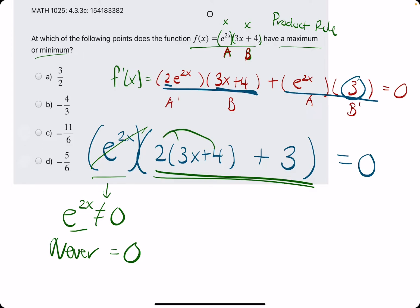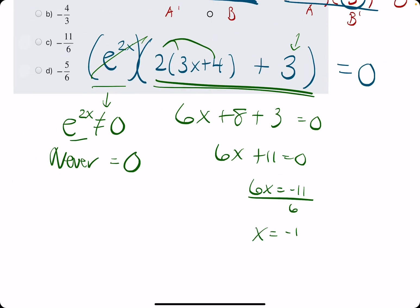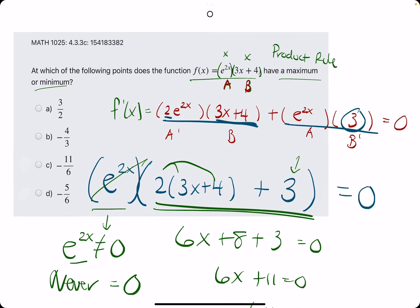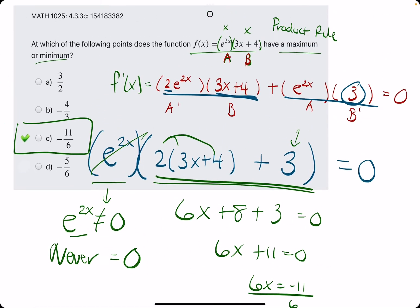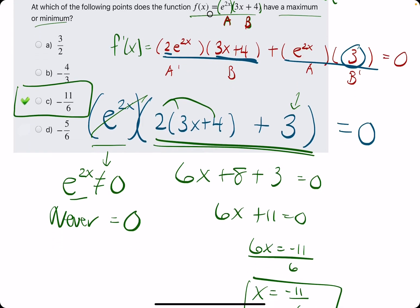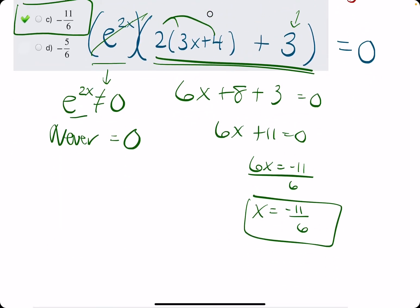I'll distribute the 2 to get 6x plus 8, then tack on the plus 3, giving 6x plus 11 equals 0. Solving for x: subtract 11, divide by 6, and we have x equals negative 11 over 6, which is option C. This is the x value that makes f prime equal to zero, so it's a possible location of a max or a min — it's a critical point.